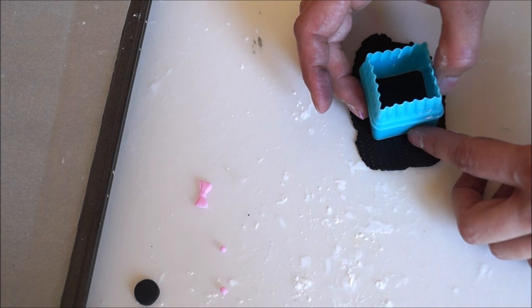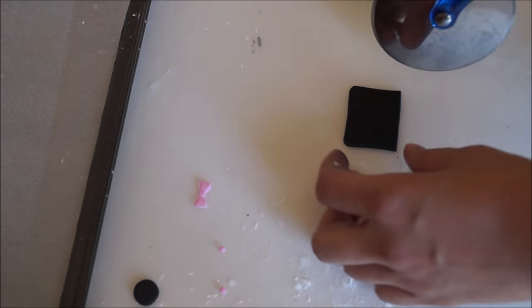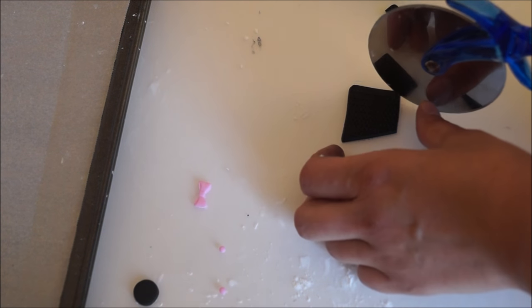Cut out a square shape using the smallest cutter that you have, and then because it was a little bit too big, I am cutting a third of that at the bottom and on the sides.